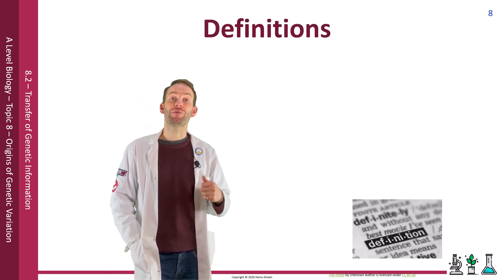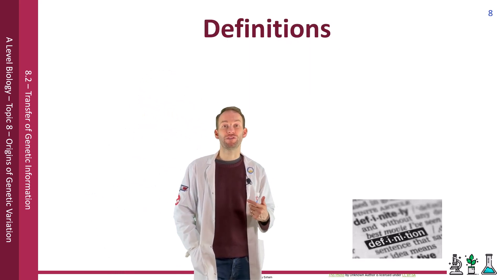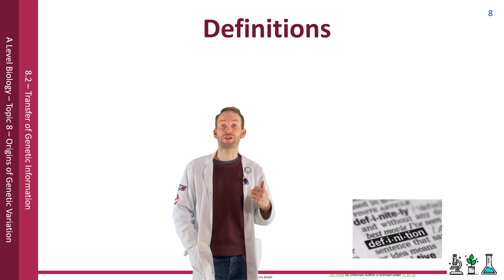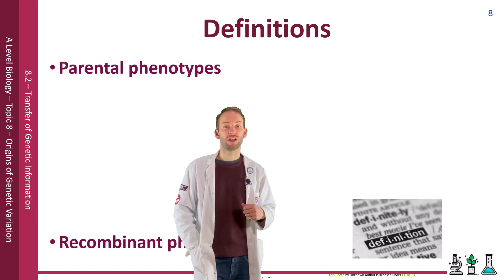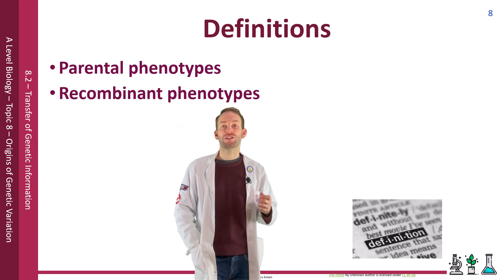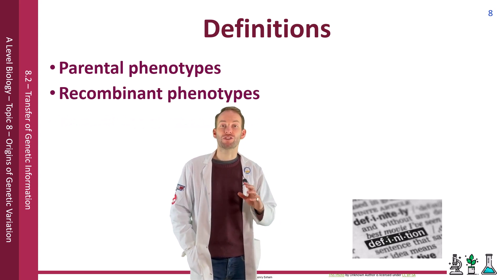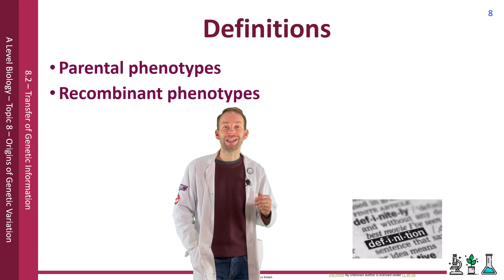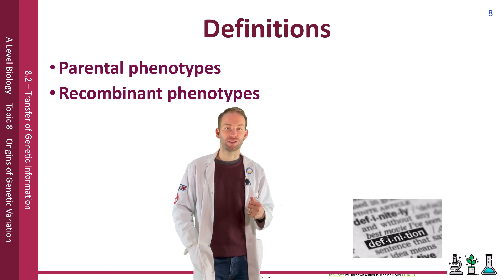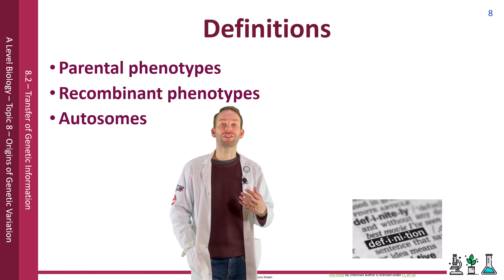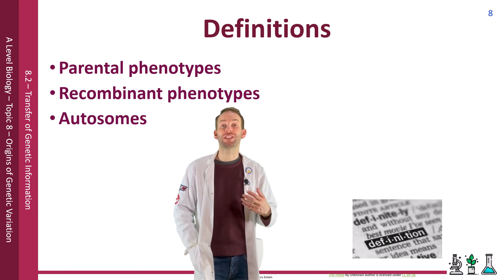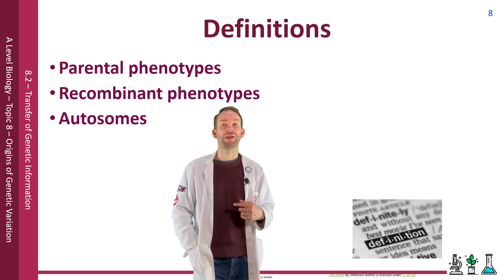It's important to understand the difference between parental phenotypes and recombinant phenotypes. Parental phenotypes describe offspring that have the same phenotypes as the parental organisms. Recombinant phenotypes describe offspring that have different phenotypes to their parents as a result of recombination of chromosomes during sexual reproduction. Autosomes are any chromosomes that are not the sex chromosomes — in humans we have 22 pairs of autosomes and one sex chromosome pair.